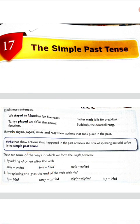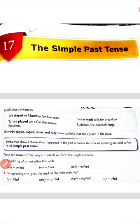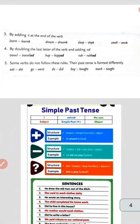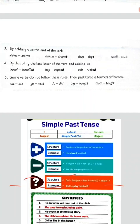Rule two: by replacing Y with IED. Y को IED से replace करके भी बना सकते हैं। जैसे fry का fried, carry का carried, apply का applied, try का tried। जो IED और ED लगाके हम लोग बना रहे हैं, वो past के काम हैं।